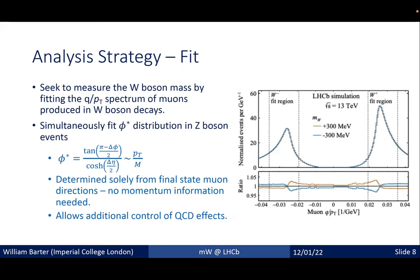Our analysis strategy is to look at the lepton p_T distribution — technically the charge of the lepton divided by the p_T. This allows us to plot W minus and W plus on the same plot, and to show the entire high-p_T lepton tail, since as charge/p_T goes to zero, p_T goes to infinity. This plot also shows the challenge: a 300 MeV shift in the W boson mass causes per-percent level variations, but we need per-mill level sensitivity.